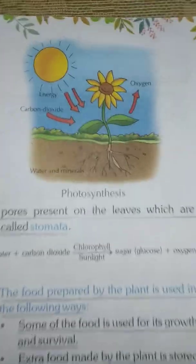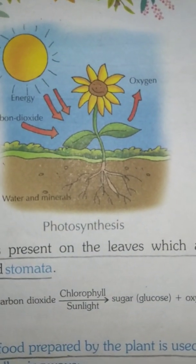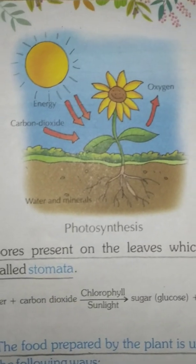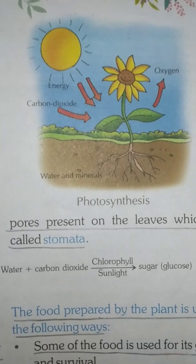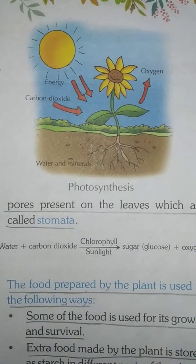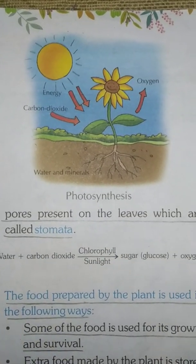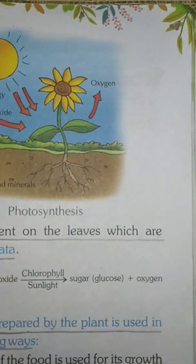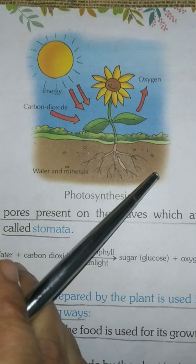Now I will do photosynthesis. Do you know what photosynthesis is? It is the process by which green plants make their food in the presence of air, water, and sunlight. Only green plants can make their own food.